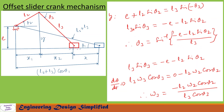To find omega3, we differentiate this equation with respect to time. We get l3·omega3·cos(theta3) = 0 − l2·omega2·cos(theta2), since e is a constant and its derivative is 0. After rearranging, omega3 = −l2·omega2·cos(theta2) / (l3·cos(theta3)).